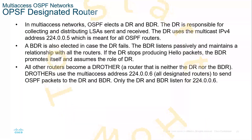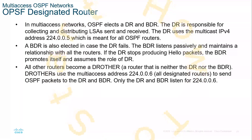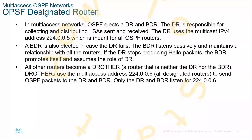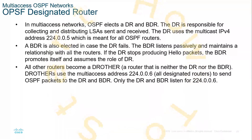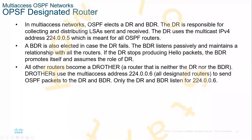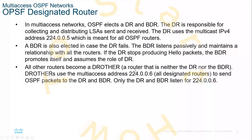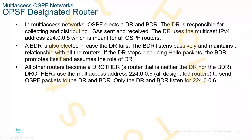DR others will use the multicast address 224.0.0.6. All designated routers send OSPF packets to the DR and BDR, while only the DR and BDR will listen for 224.0.0.6. So the DR other will send to that multicast address, which is a clever way of saying send to the DR and BDR.